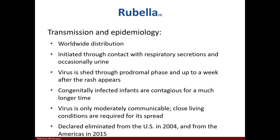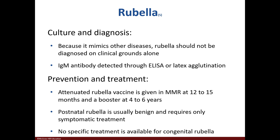Rubella can be transmitted via respiratory droplets. The virus is shed in the prodromal stage where the earliest symptoms appear, and this virus is typically spread by people living in close quarters. In 2004, the US eliminated the virus. Rubella can be diagnosed by an ELISA and can be prevented with the MMR vaccine. Postnatal rubella only requires symptomatic treatment, while there is no treatment for congenital rubella.